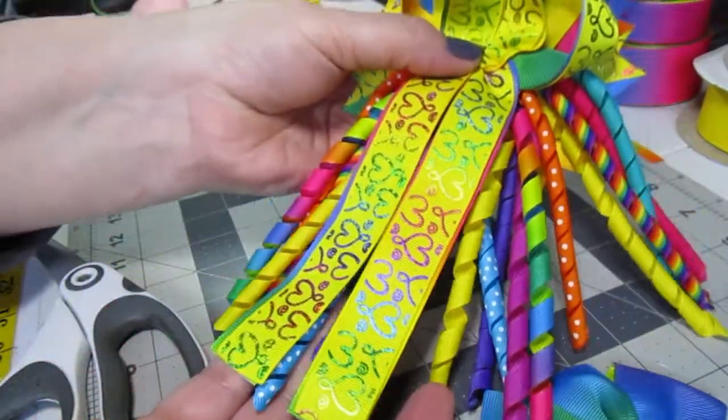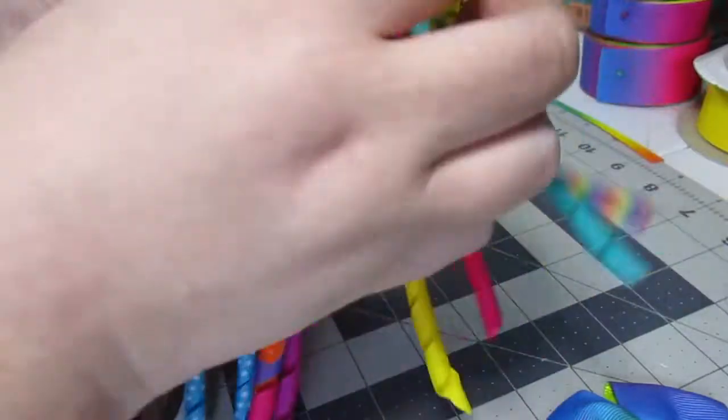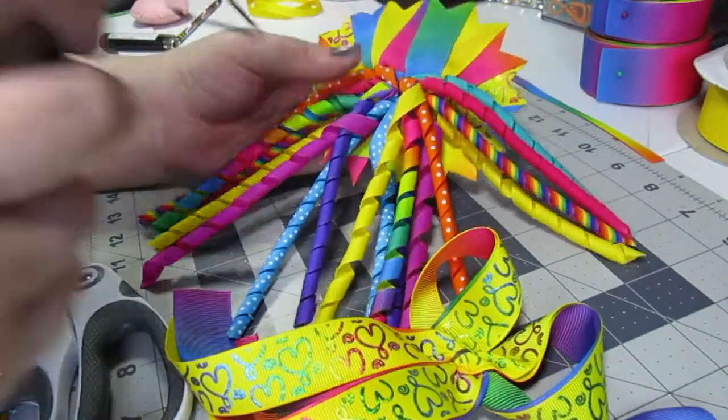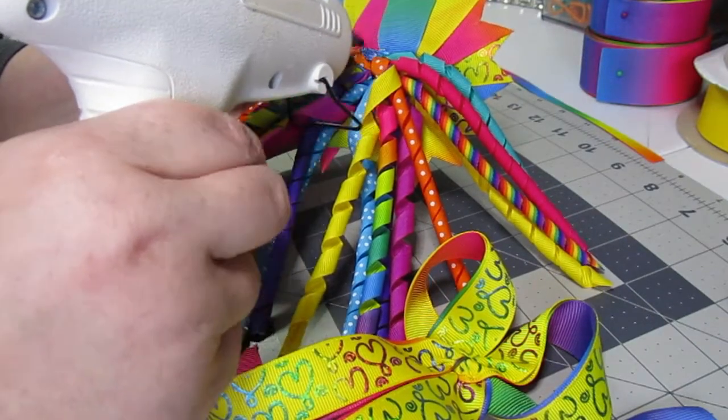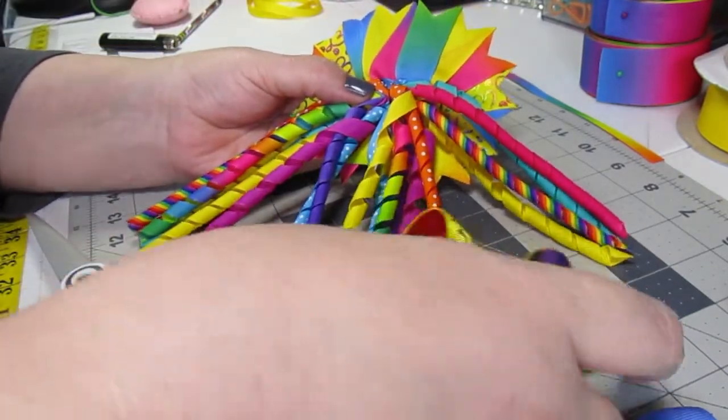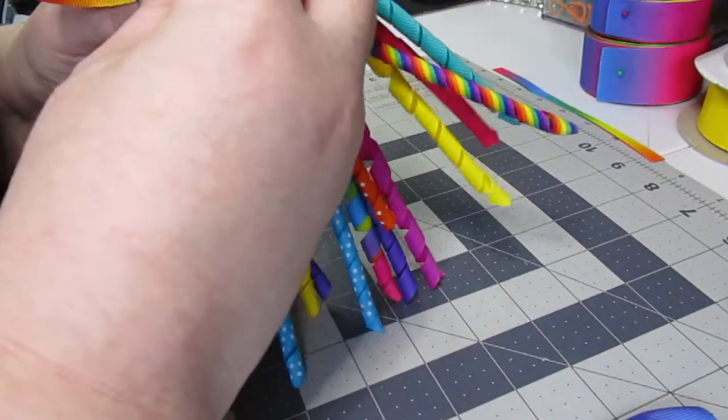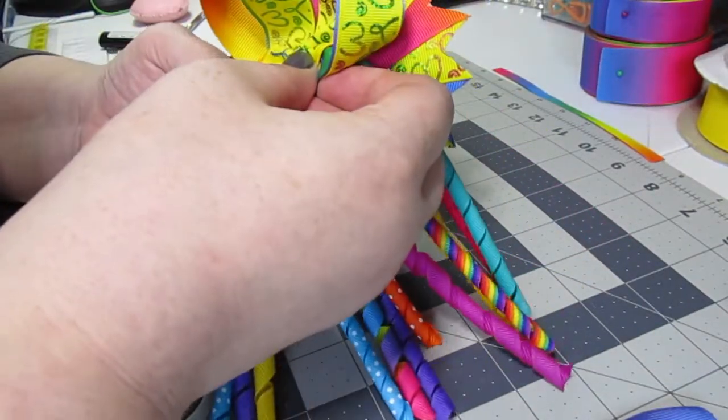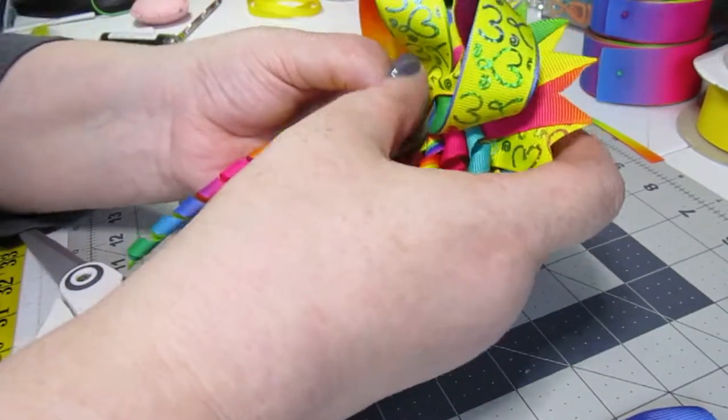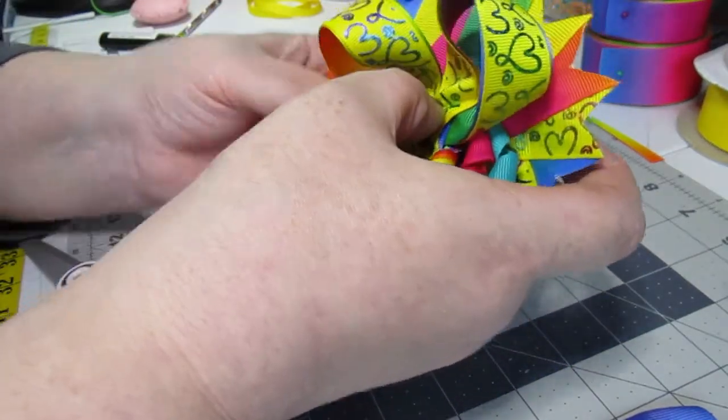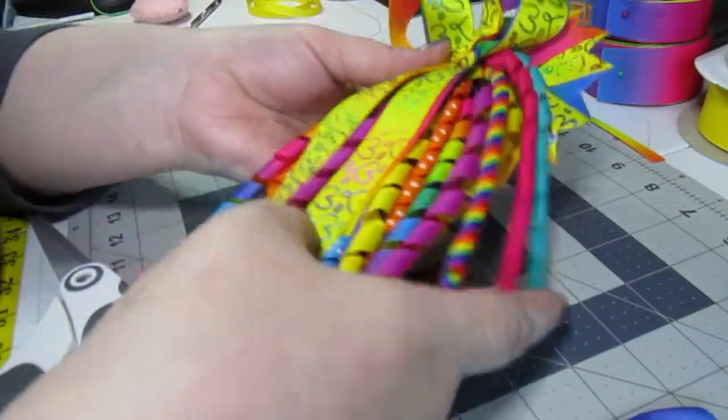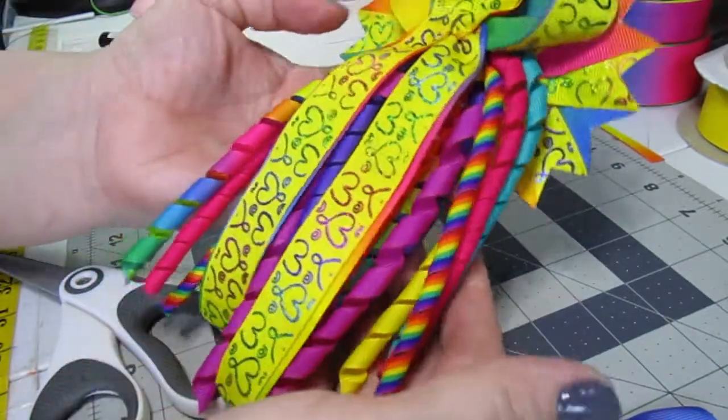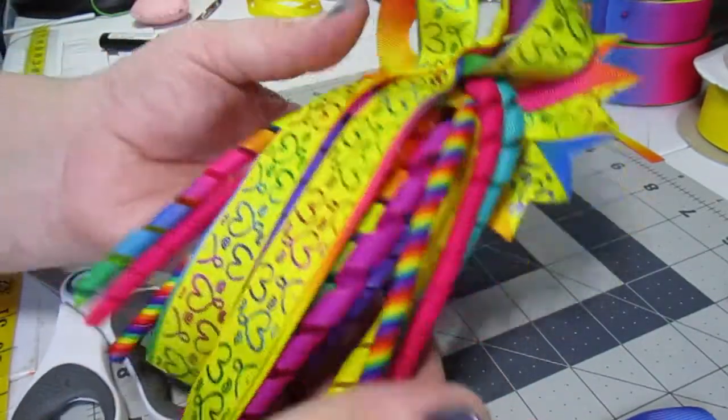All right. You want to make sure your spikes are still even. Give a tug on them if you need to. And make sure that this is hanging just below the center because what you're going to do is now you're going to be taking that topper that we made and you are going to be just putting a little dot of glue right there. Glue it on. This is what you have so far. It's going to be a really cute bow once we're done.